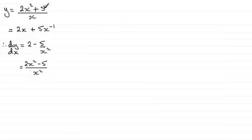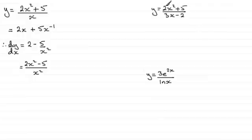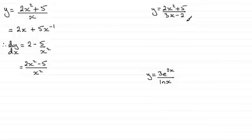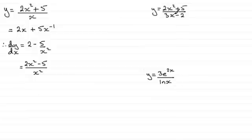That's all very well for differentiating something like that, where you had your single term in the denominator and you could divide it into each of the terms on the top. But what happens if you had something like y equals 2x squared plus 5 over 3x minus 2? We've got two terms in the denominator now, and we can't really do the same kind of division. And for y equals 3e to the power 2x all over the natural log of x, there's just no way to divide through like that. So we've got to come up with a different way of being able to differentiate things like this.